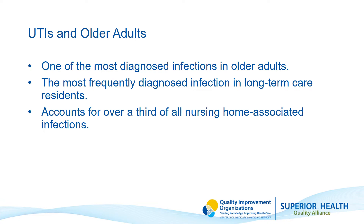UTIs are common, particularly in older adults. They are one of the most diagnosed infections in older adults and the most frequently diagnosed infection in long-term care residents. UTIs account for over one-third of all nursing home associated infections. Women are more likely to suffer from urinary tract infections than men for many reasons, one of which may be because the female urethra is much shorter than the male urethra.